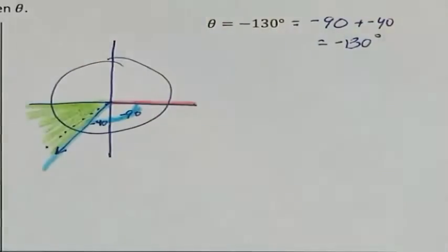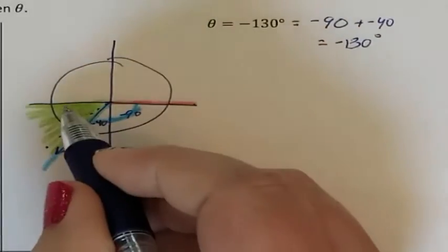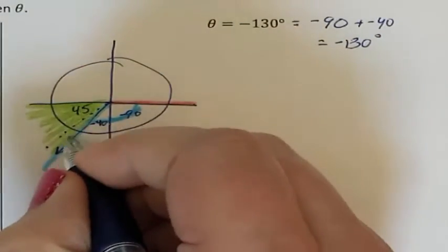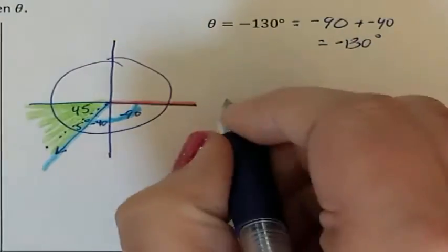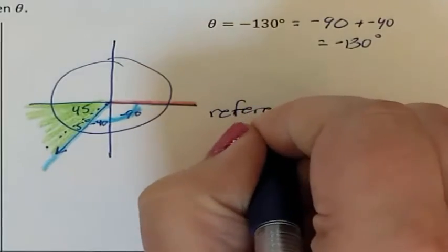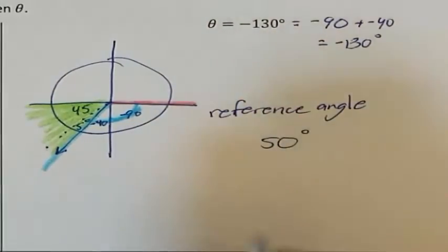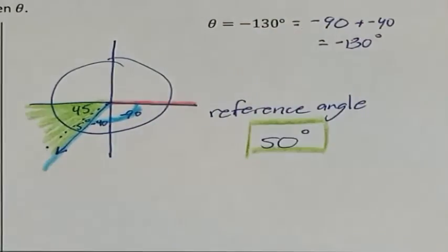So I know from here to this dotted line would have been 45 degrees. The remaining space here was 5 degrees. So my reference angle is the 45 plus the 5, which is 50 degrees. So my reference angle is 50 degrees.